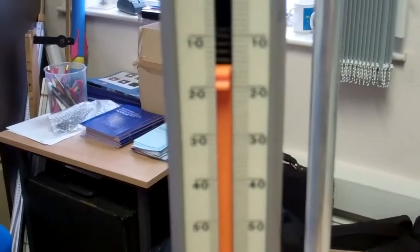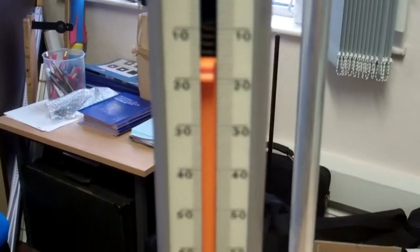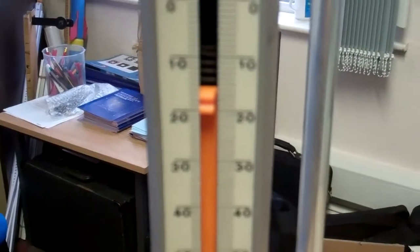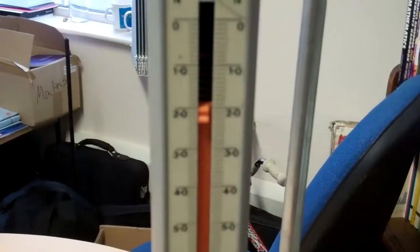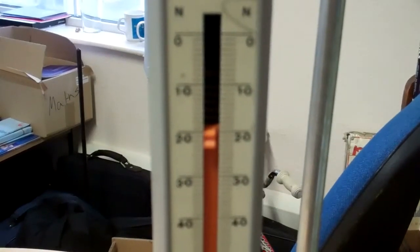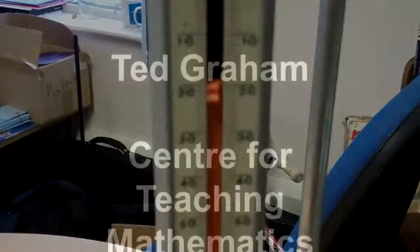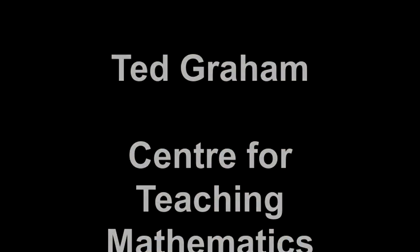Looking at the first force metre, this is the one at the 30 centimetre point, we can see that we've got a force of just under two newtons. And looking at the force metre that's attached at the 80 centimetre mark, we can see that we've got a force of just over two newtons.